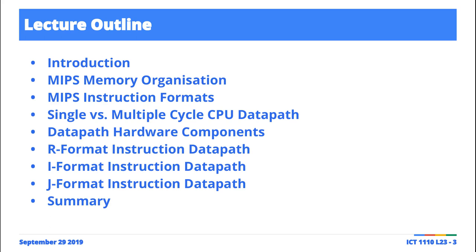Our discussion up to this point made the assumption that instructions were being executed using a single-cycle CPU data path — instructions executed sequentially, one at a time. That's really not generally the case. In an ideal case, what happens on your machine is instructions are executed in parallel, simultaneously. Our discussion of this so-called data path and control will be restricted to the core components involved, because the next series will look at how you use fundamental building blocks — logic gates — to build these hardware components.